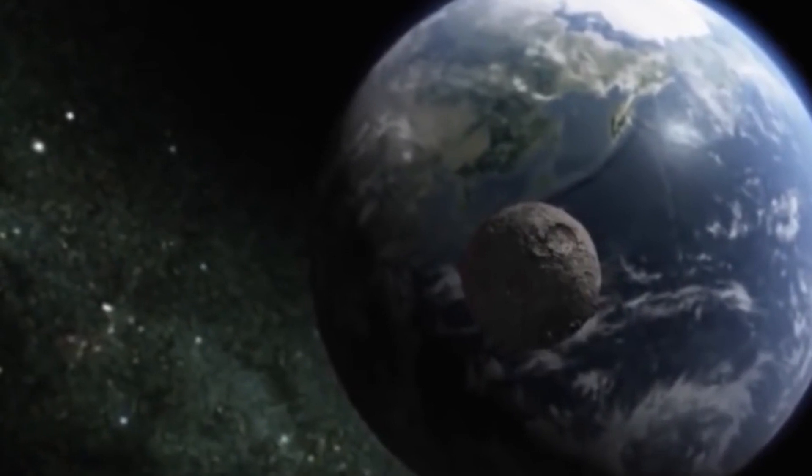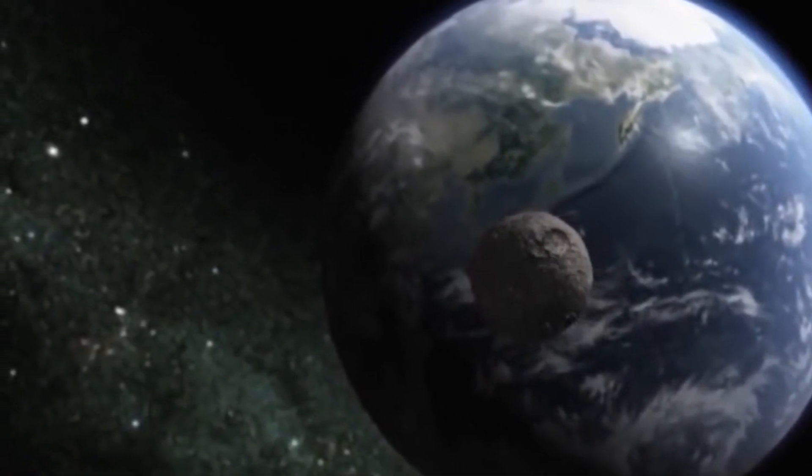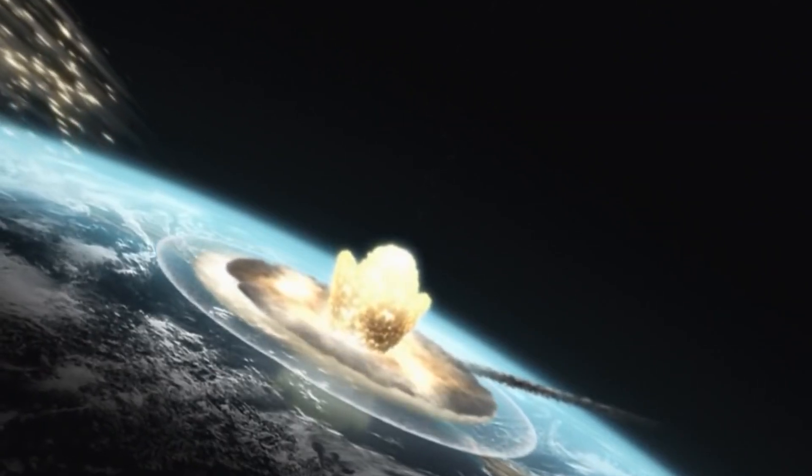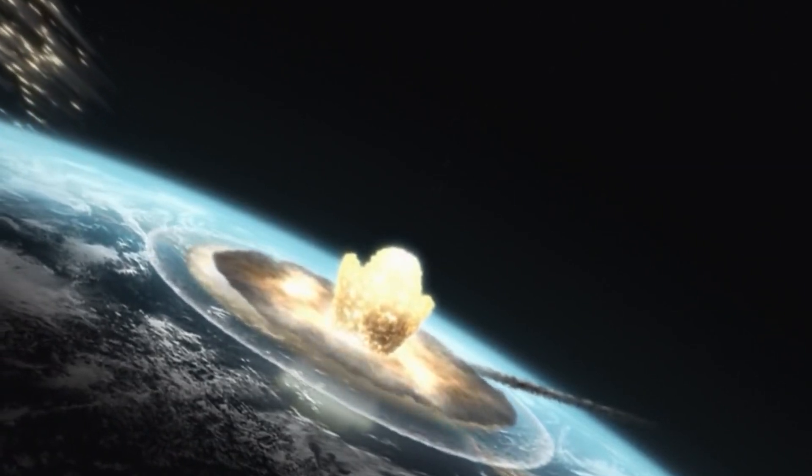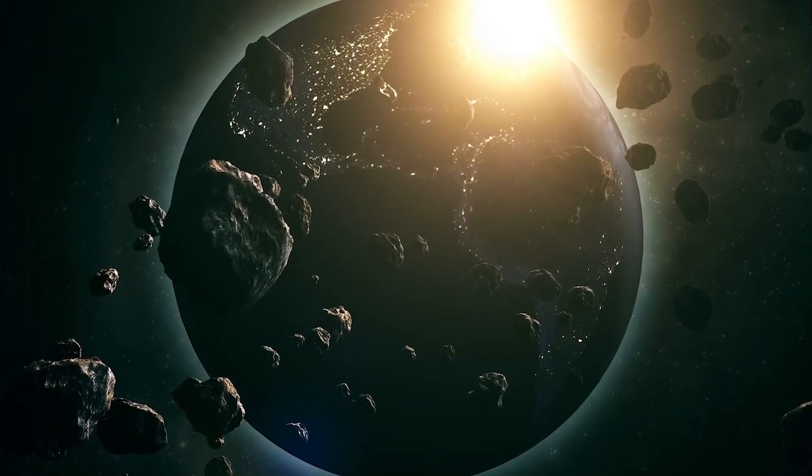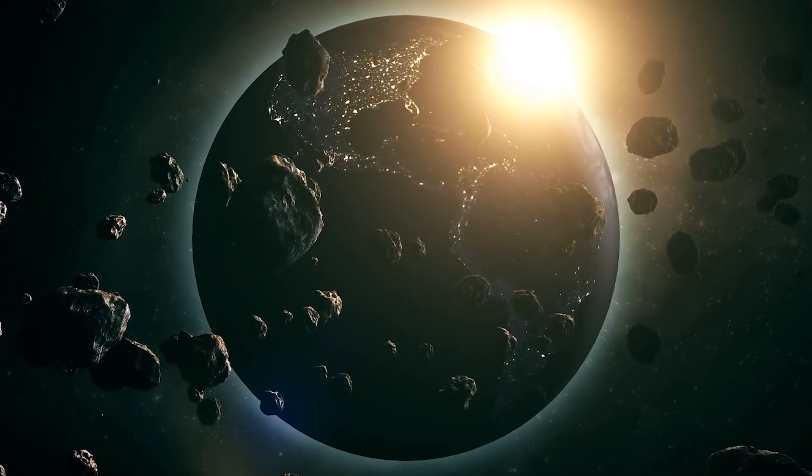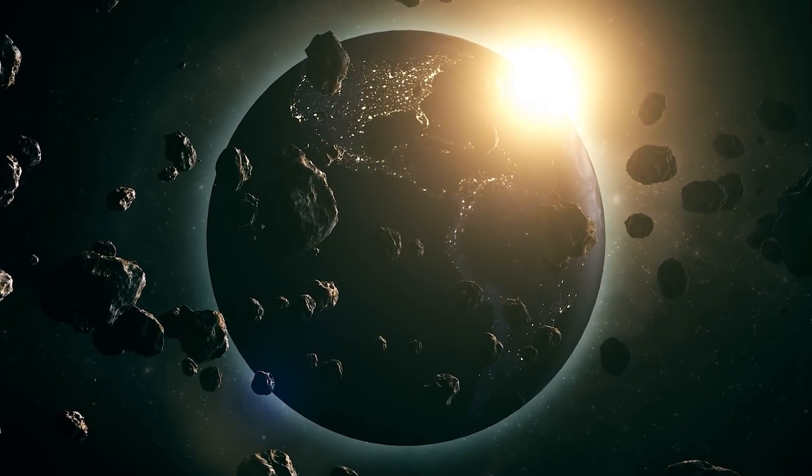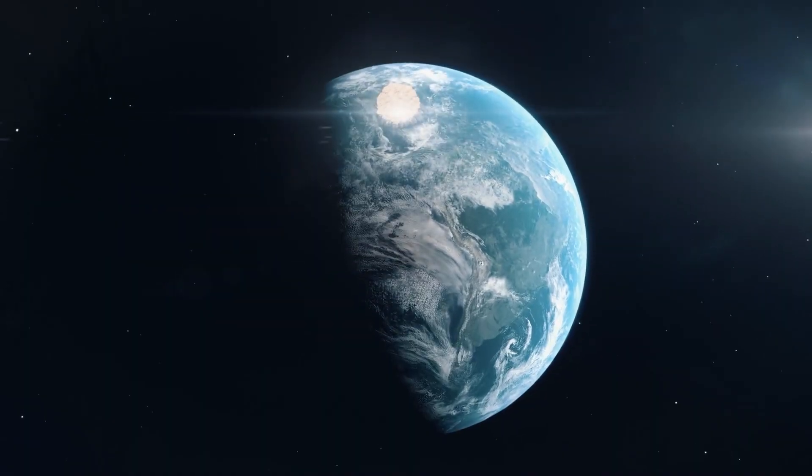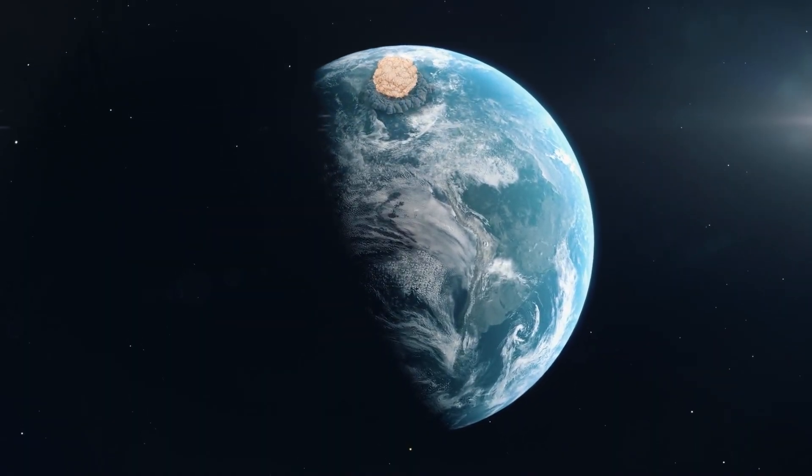This video highlights crucial factors related to asteroids, emphasizing the importance of mass in categorizing them. Different types exhibit varying densities, affecting their survival during atmospheric entry. The speed of an asteroid influences impact intensity, and the impact location determines observed destruction. While most asteroids may fall into uninhabited areas, mitigating the risk of collisions with populated regions is a priority for space agencies like NASA.